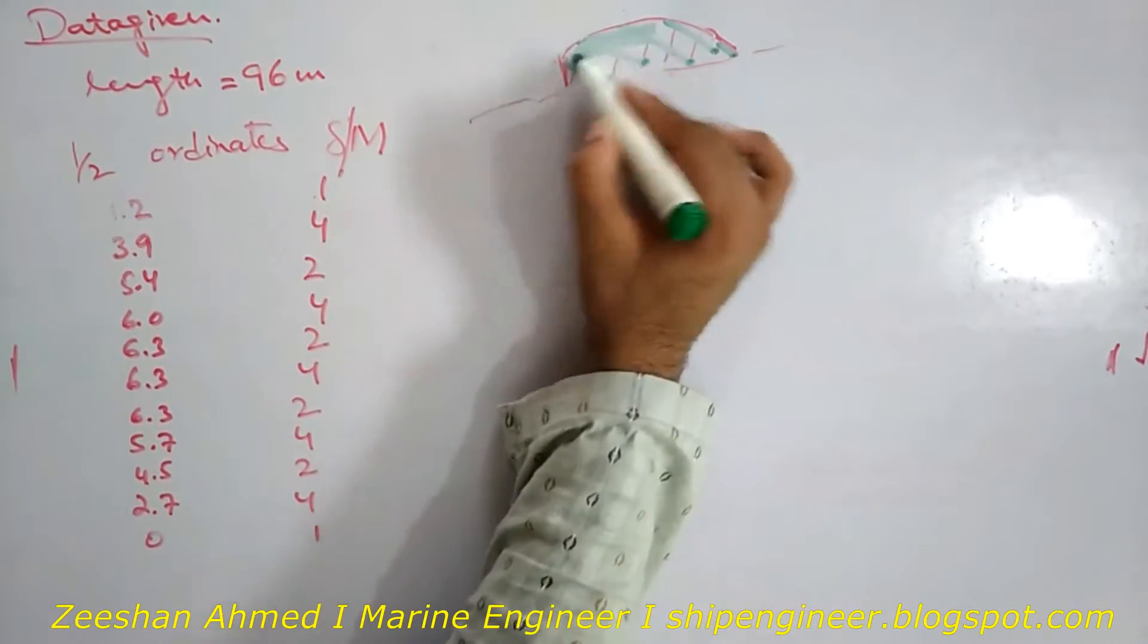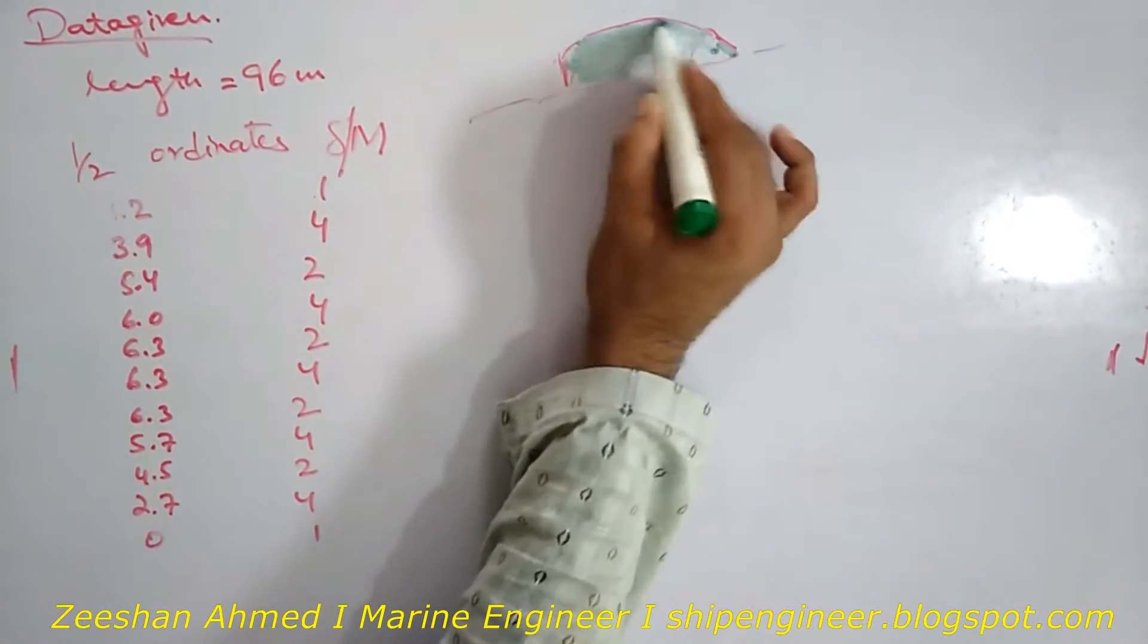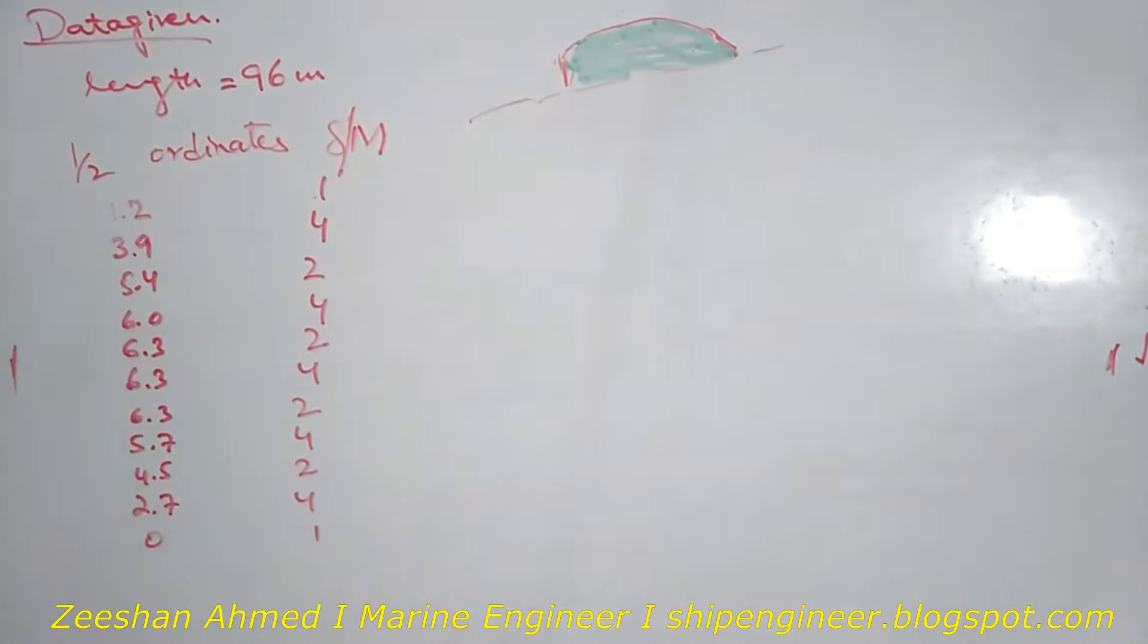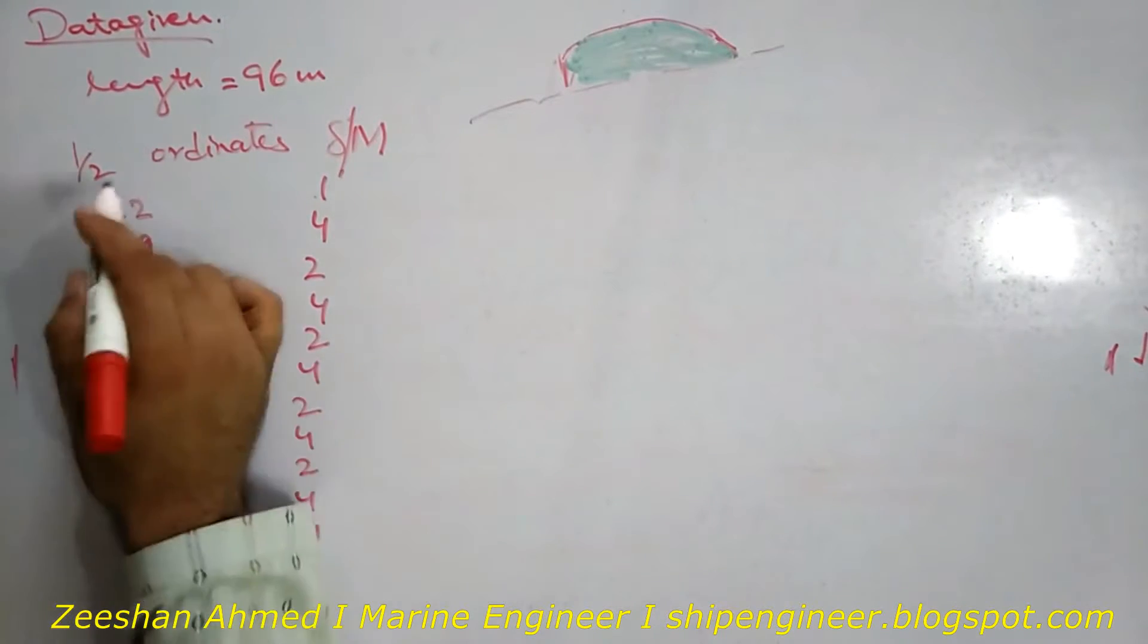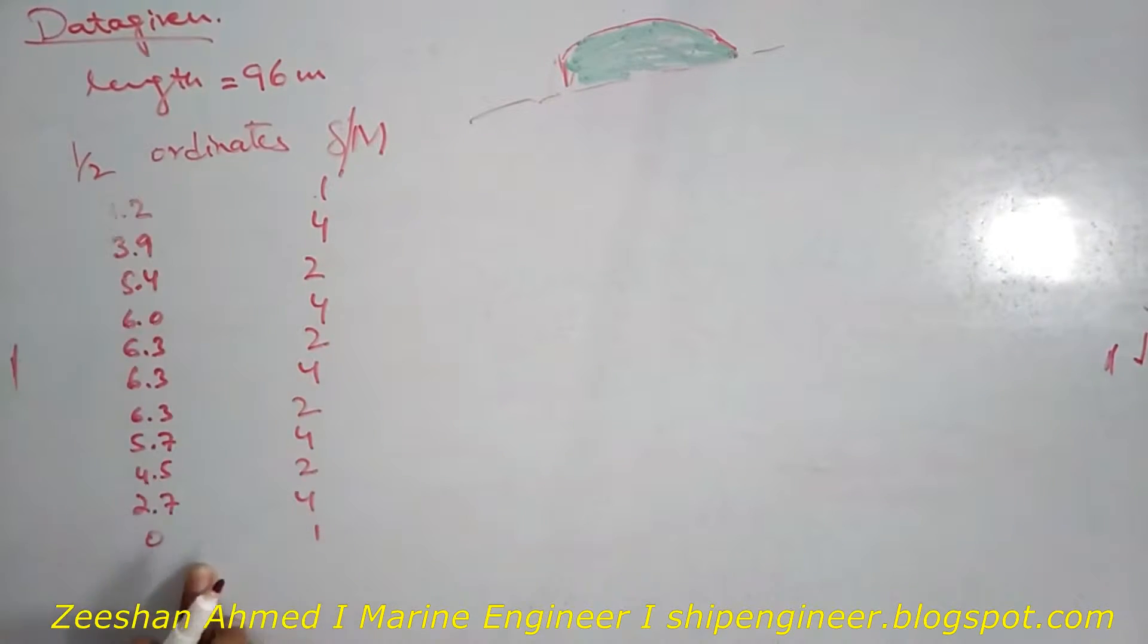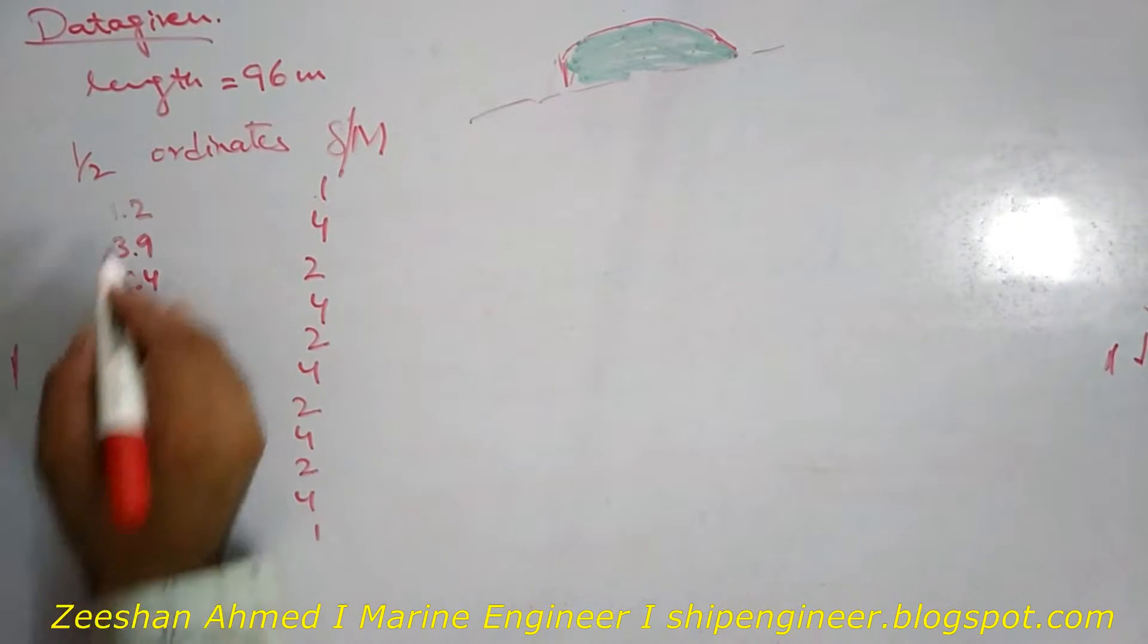Half ordinates means these are the water plane area, and these are in meters.